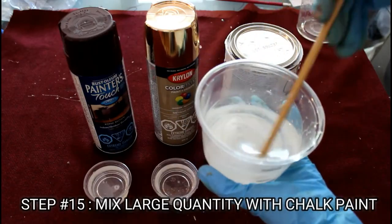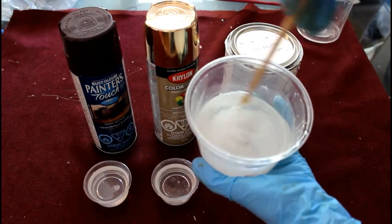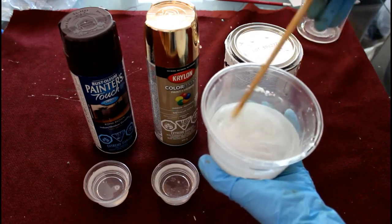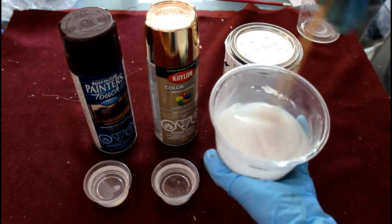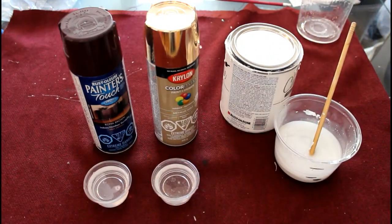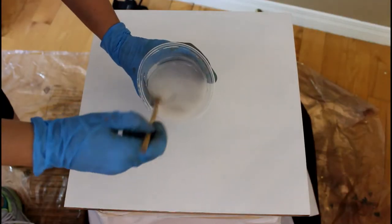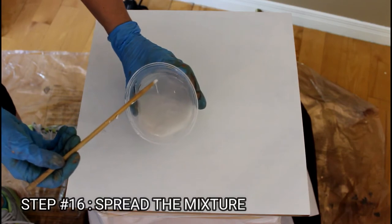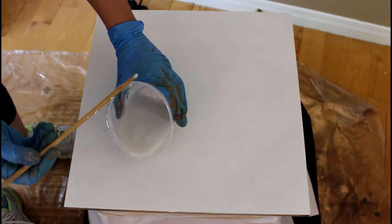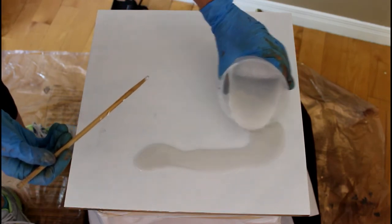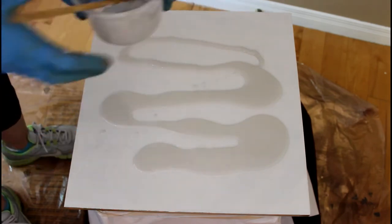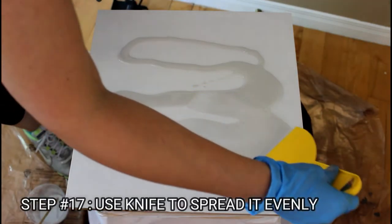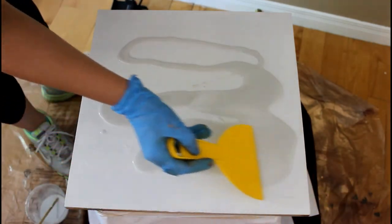I'm gonna start first with a white chalk paint that I'm mixing with a large quantity of epoxy. I will then let it sit for a few minutes and now that it's mixed and it's settled a bit I'm gonna pour three quarters of that mixture all along the table surface. I will use a putty knife to spread it evenly everywhere.